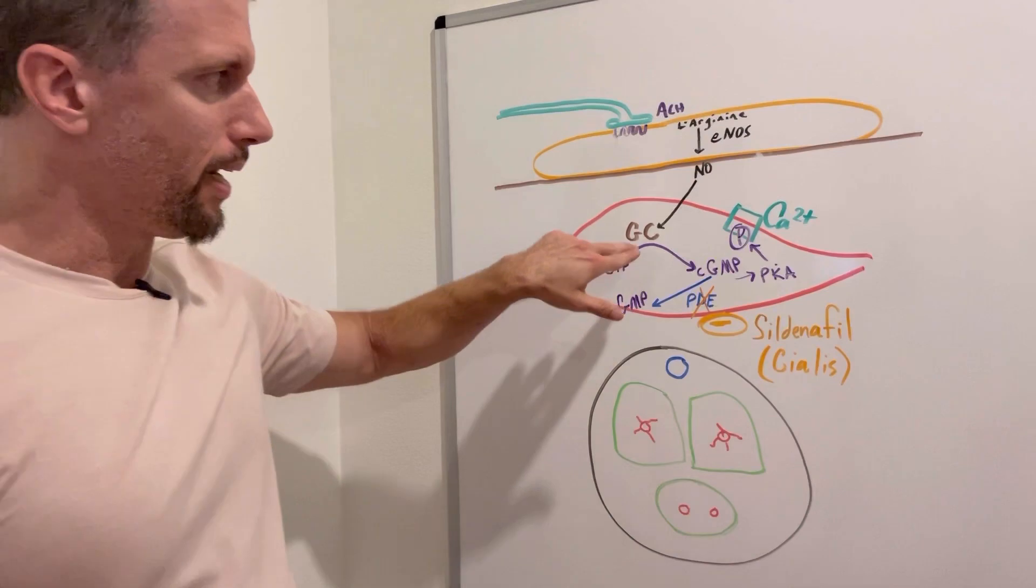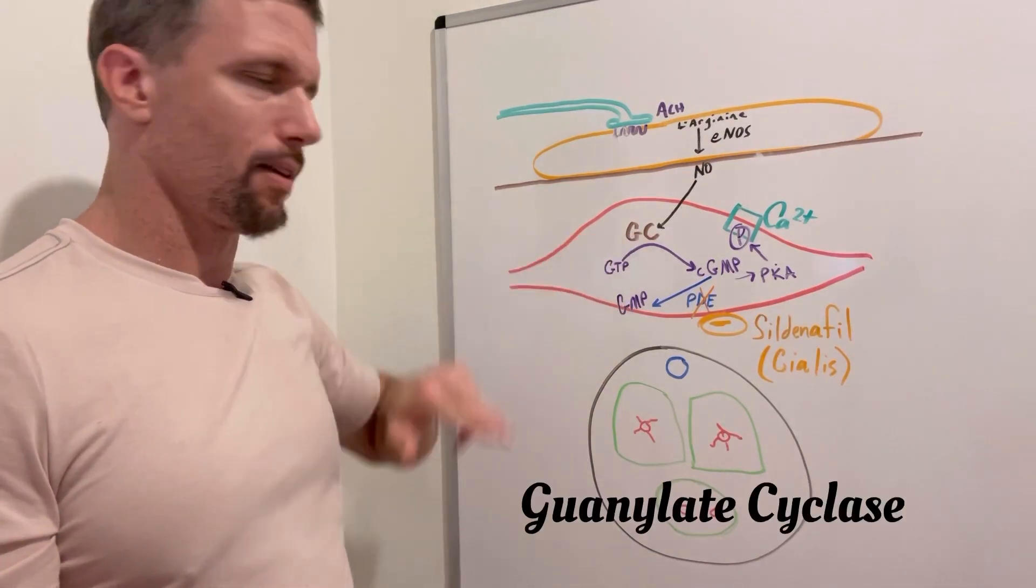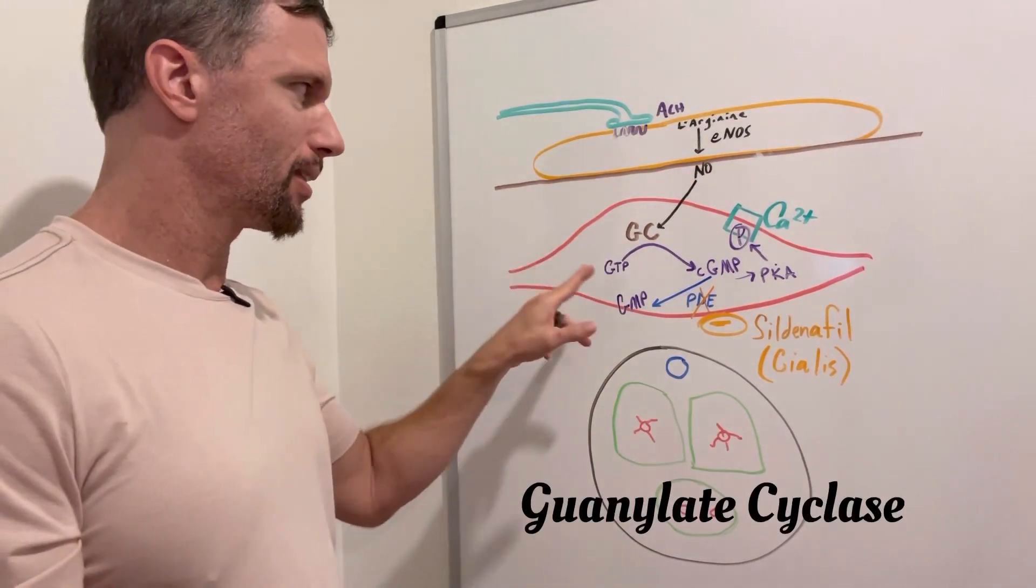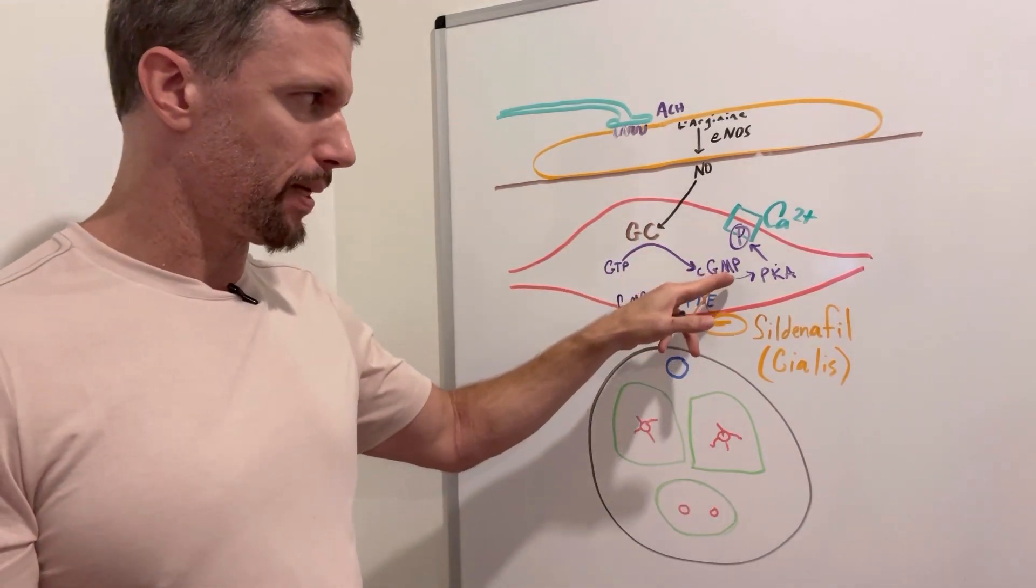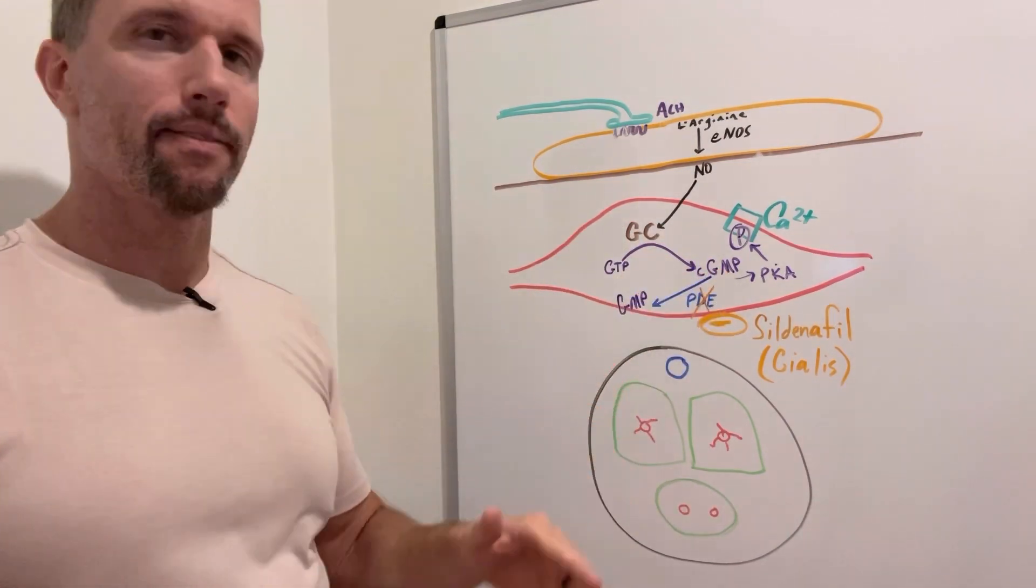And activates guanylate cyclase, which is an enzyme that takes GTP, converts it to cyclic GMP, which then activates kinases.